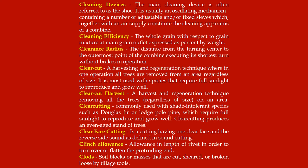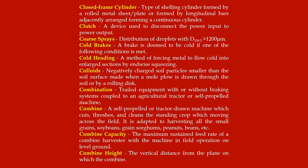Clinch allowance: allowance in length of rivet in order to turn over or flatten the protruding end. Clods: soil blocks are masses that are cut, sheared or broken loose by tillage tools. Closed frame cylinder: type of shelling cylinder formed by a rolled metal sheet plate or formed by longitudinal bars adjacently arranged forming a continuous cylinder. Clutch: a device used to disconnect the power input to power output.